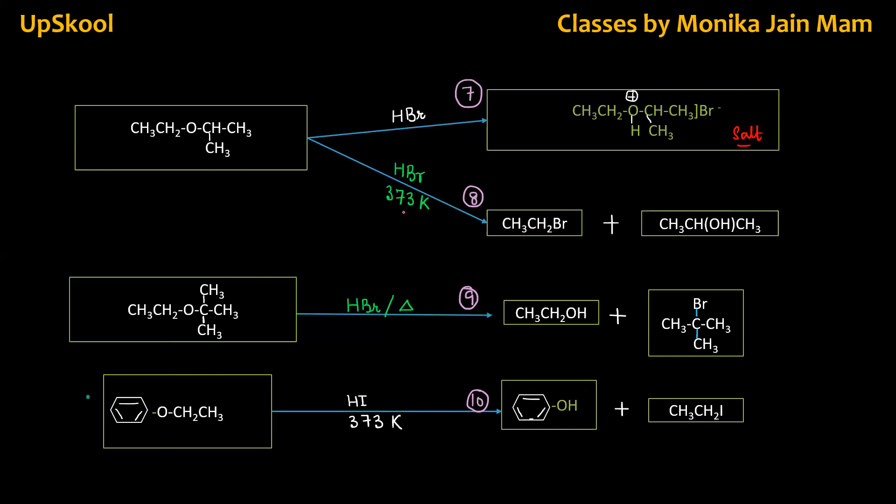If you add HBr at high temperature, it cleaves. And halogen will go with the smaller chain. This follows SN2 mechanism transition state. Here alkyl halide will form tertiary, and the other will become alcohol.